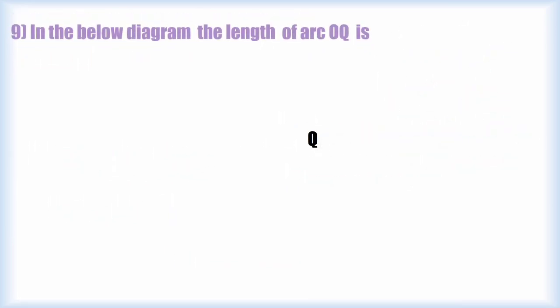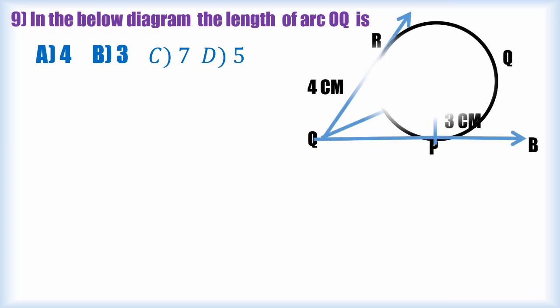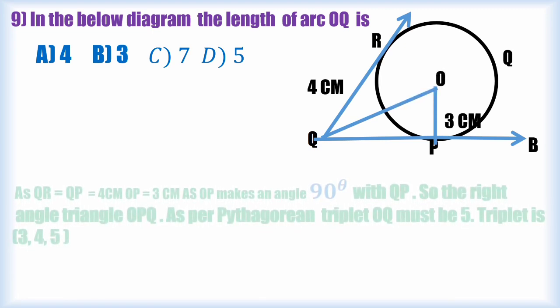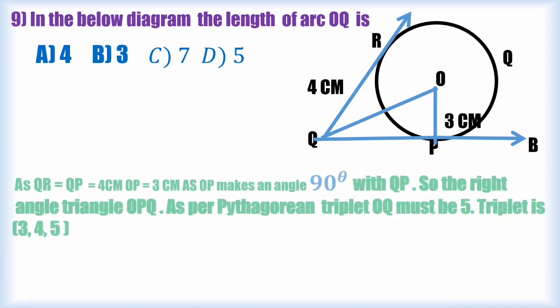In the blue diagram the length of the arc OQ. Four options are given. A diagram is also given. A diagram is also explained in the video itself. You can able to see that diagram that is unfolding to you. Then here OP is making the angle of 90 degrees with QB.